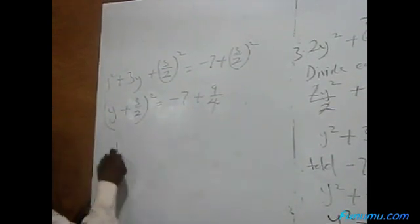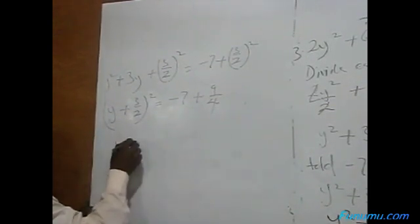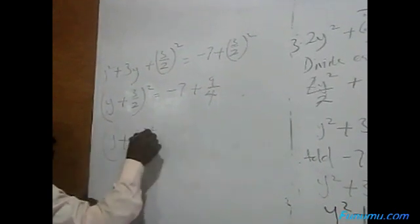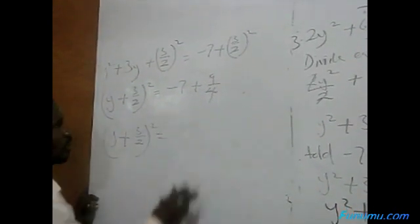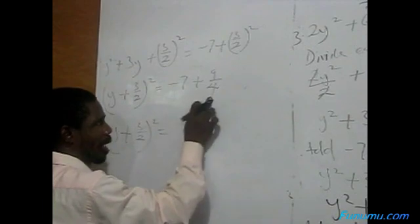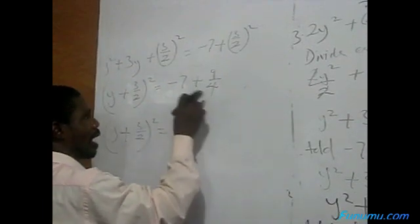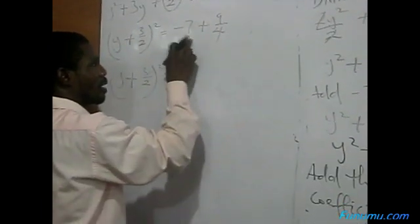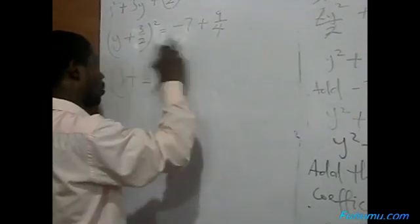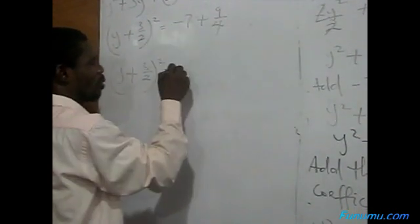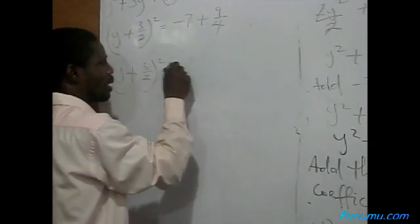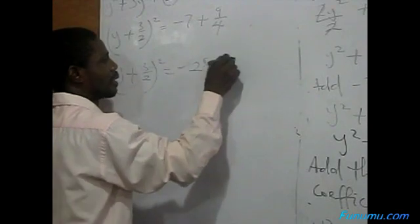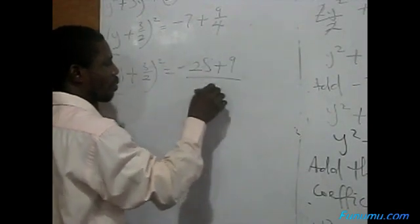Simplify the right-hand side. Y plus 3 all over 2, all squared, equals — the LCM is 4 — so 4 times minus 7 gives minus 28, plus 9, all over 4.